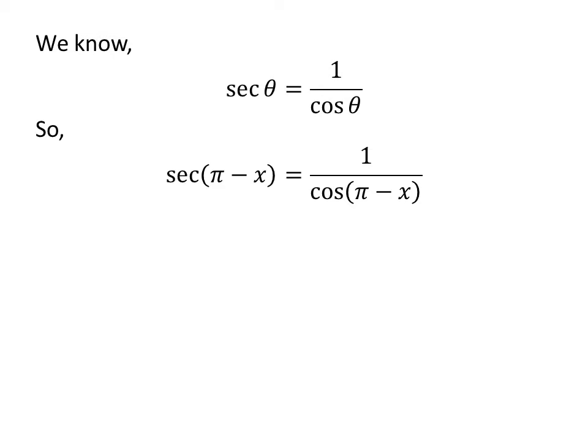So application of the above identity gives us secant of pi minus x is equal to 1 upon cosine of pi minus x.